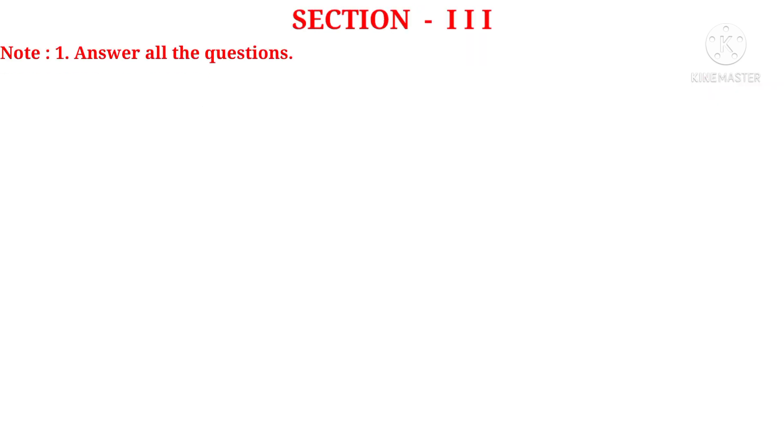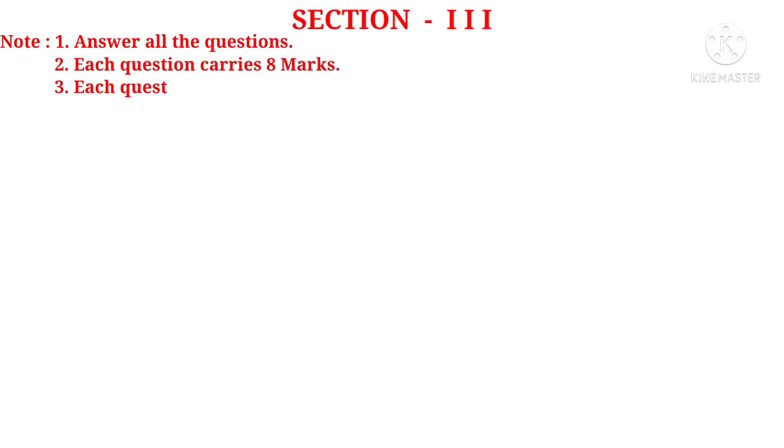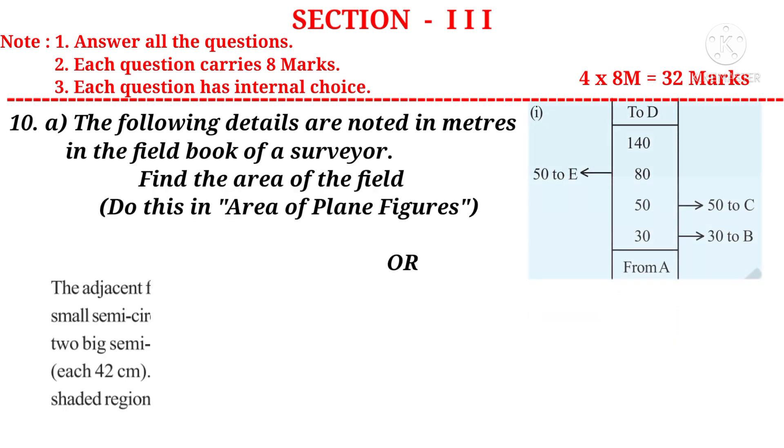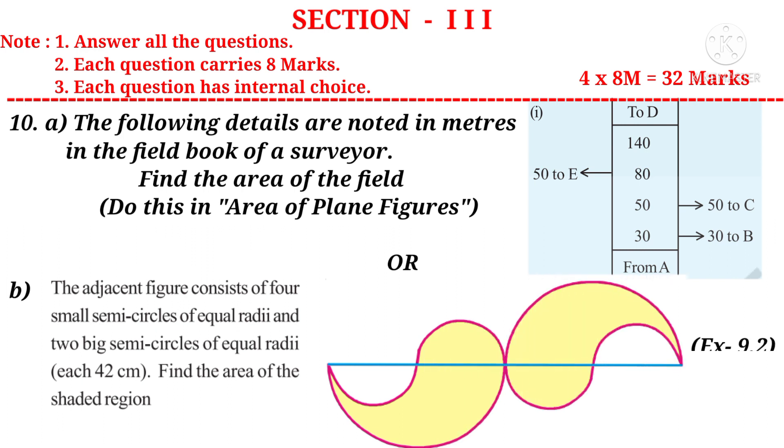Now let us take Section 3. Note: answer all the questions. Each question carries 8 marks and there is internal choice available here, and there are 4 questions. So 4 into 8 marks is 32 marks. Question 10(a): The following details are noted in meters in the field book of a surveyor. Find the area of the field. It is a question from the 11th chapter area of plane figures. Or (b), the adjacent figure consists of 4 small semicircles of equal radii and 2 big semicircles of equal radii, each has 42 centimeters. Find the area of the shaded region. It is a question from the 9th chapter.